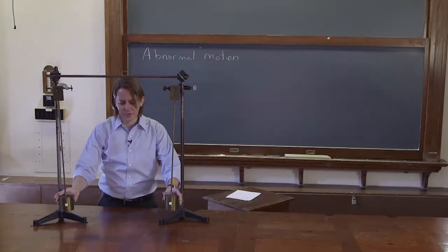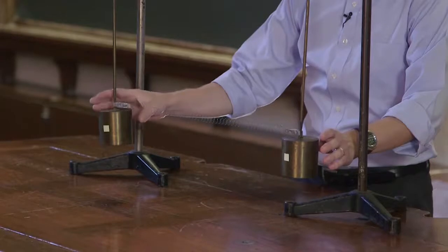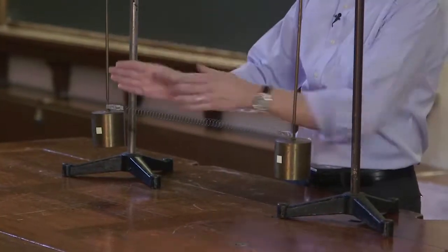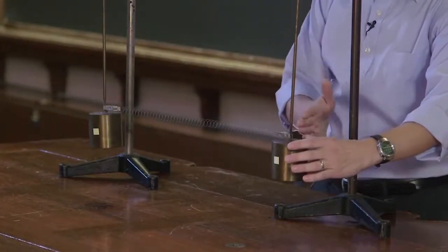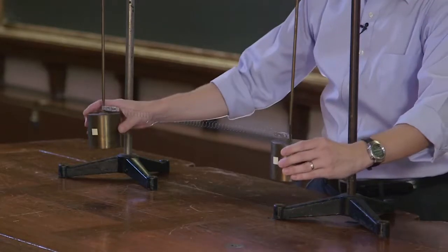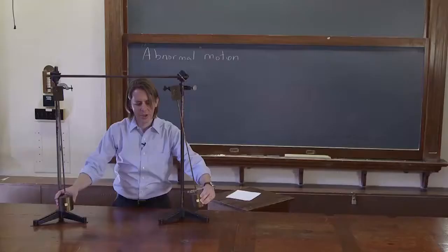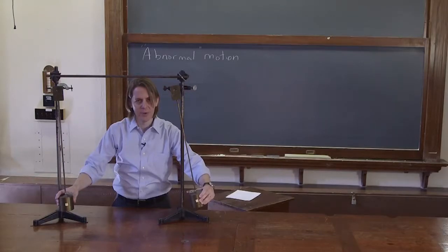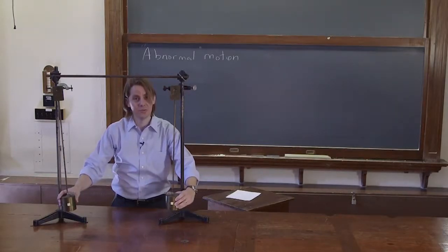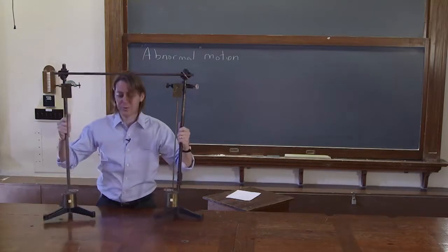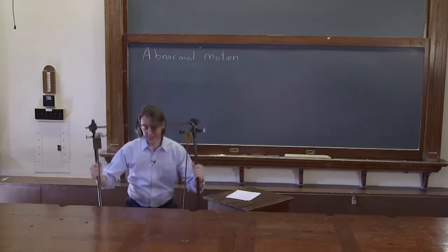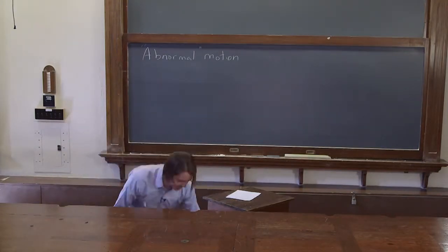We'll start with an initial condition where mass A sits here at its resting position. Mass B rests at x equals d, but we'll give it an extra amplitude like this. And when we release it from rest, we're going to see the complex motion that it makes. But you have to do your equations first before you get to do your demo. So let's put this away, and we'll get it back out in a minute.